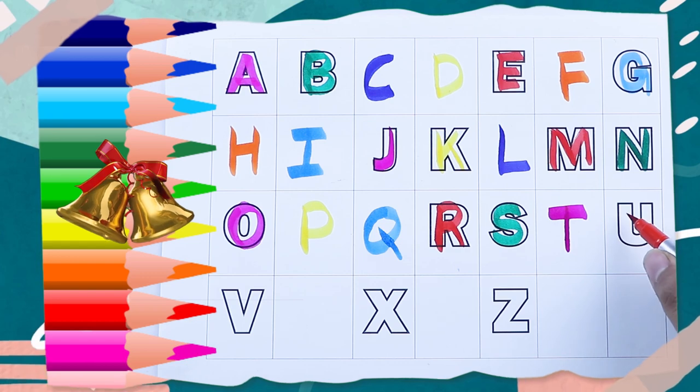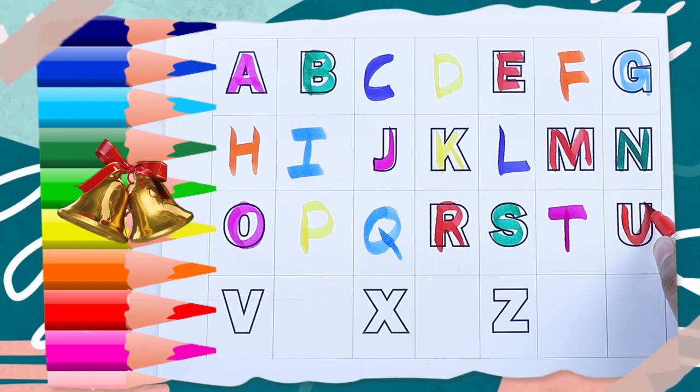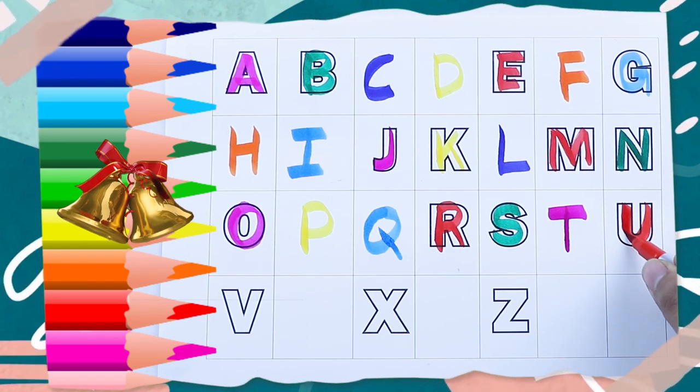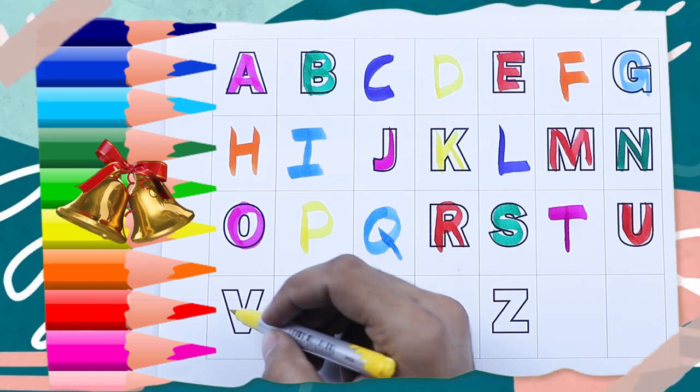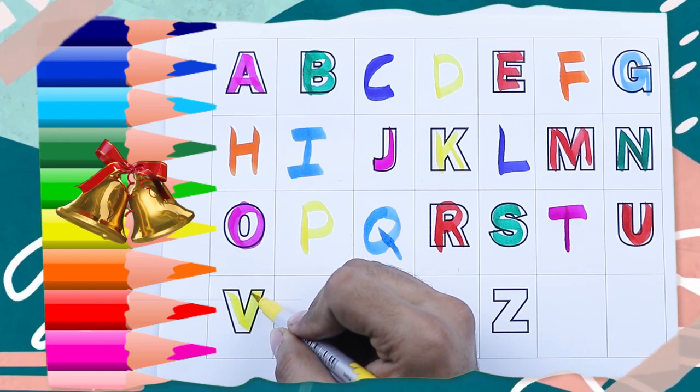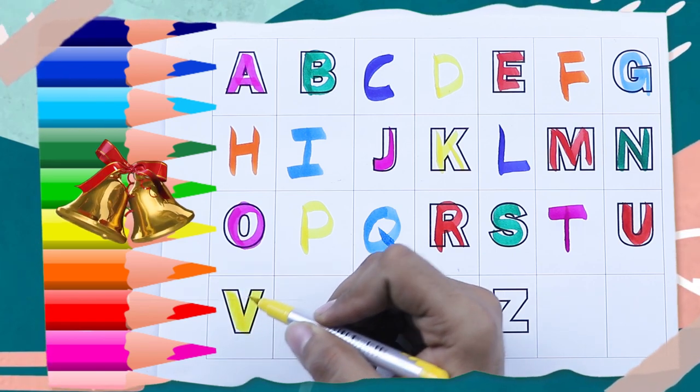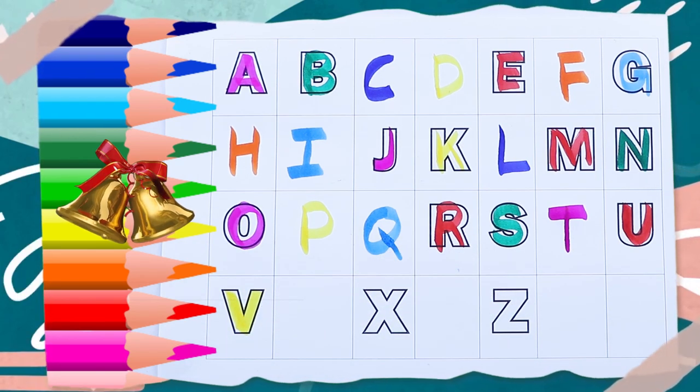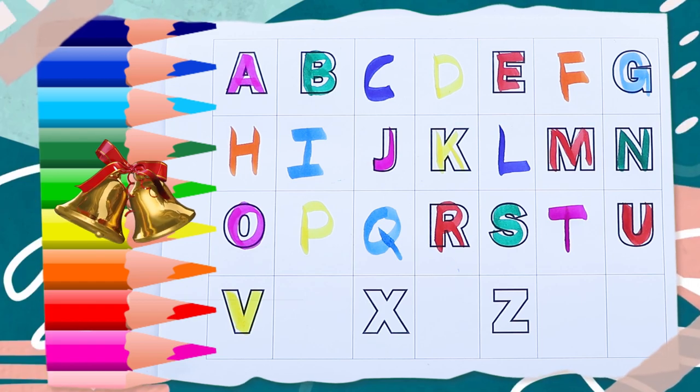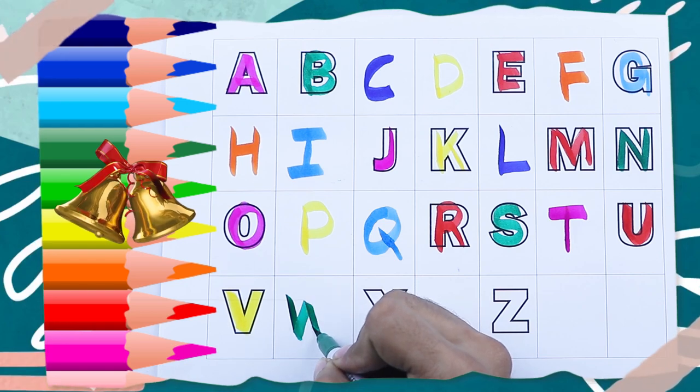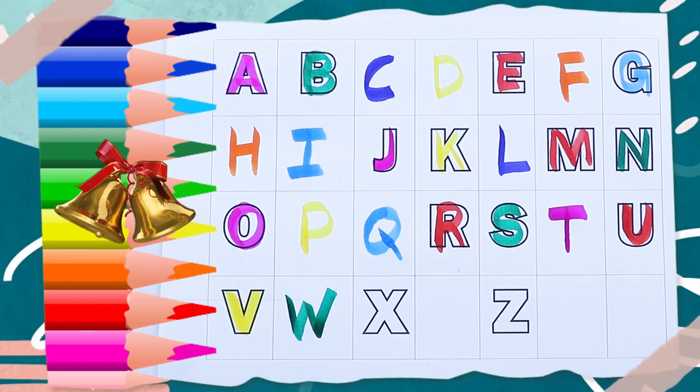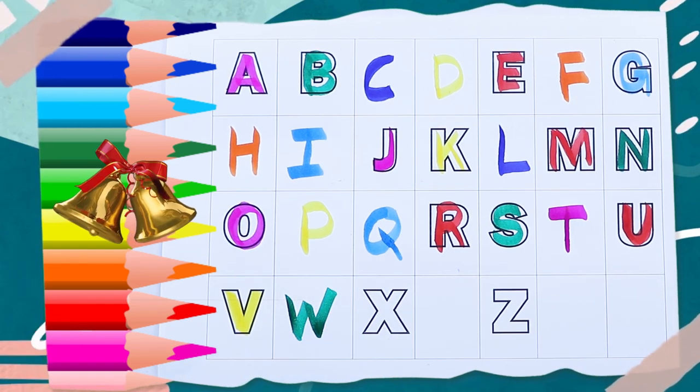What is the next? U, U for umbrella, red color, red color, red color, U. V, yellow color, V, V for wand. What is the next? W, green color, red color, W, W, W for watch.